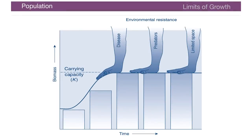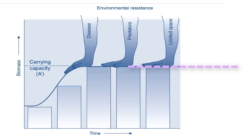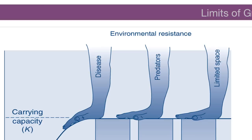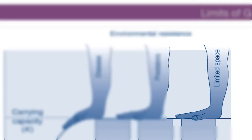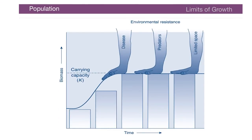This image represents the idea of carrying capacity, implying that the carrying capacity of the earth is a fixed limit. The concept of carrying capacity is the ability of an ecological region's biological systems to support the lives of the beings in that region. The upper limit comes about because there is an environmental resistance — such as disease, predators, and limited space — and all these things work together to create an upper limit for the number of people a region can support.